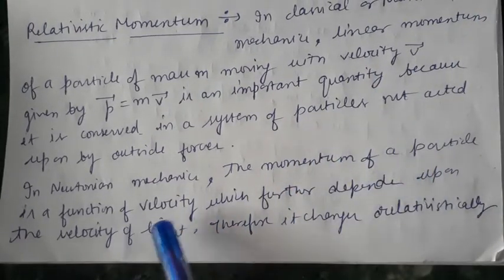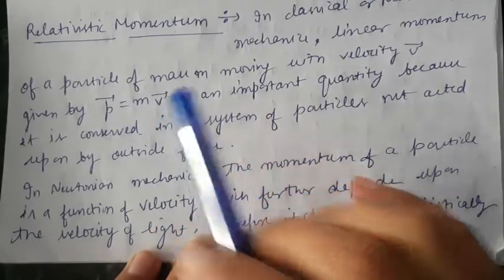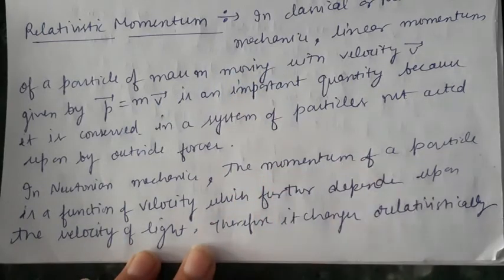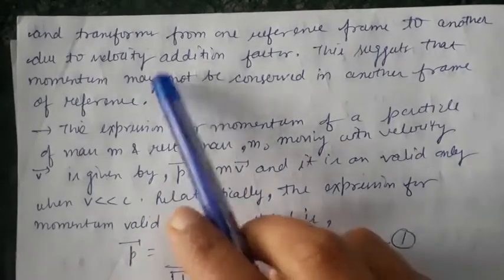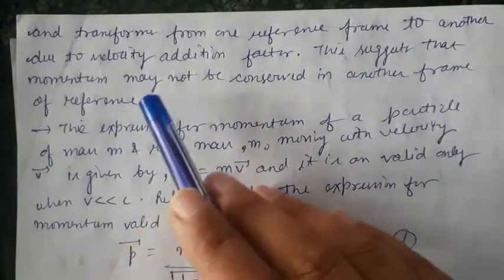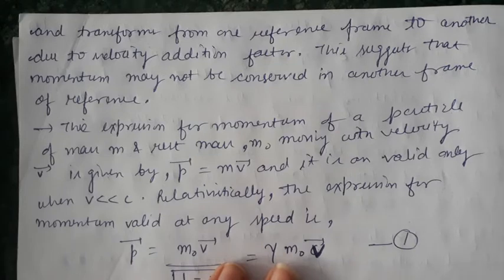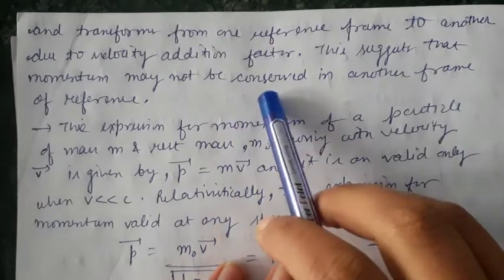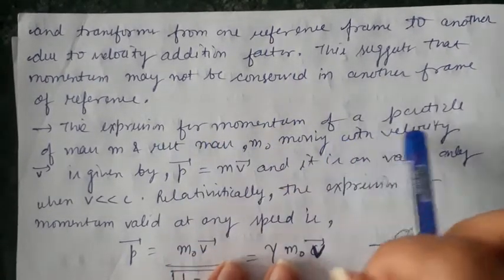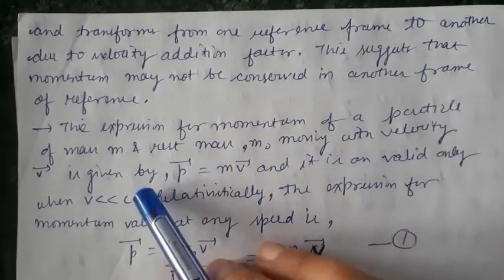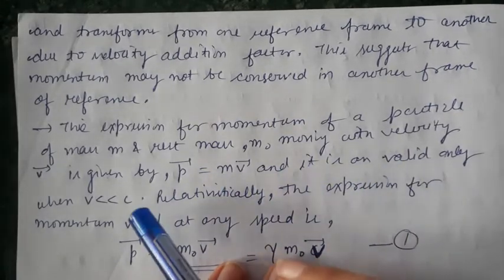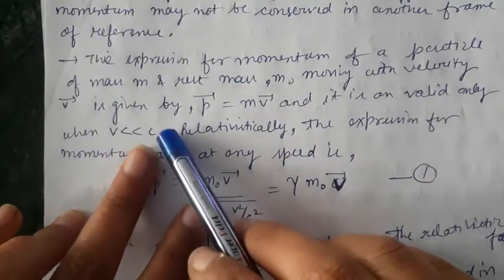The momentum of a particle is a function of velocity, which further depends upon the velocity of light; therefore it changes relativistically. This expression for momentum — p = mv — is valid only when velocity is very much less than c. The relativistic expression for momentum is valid at any speed.